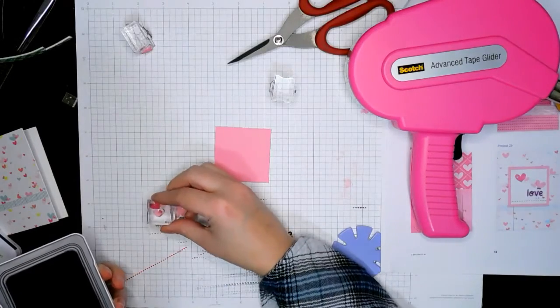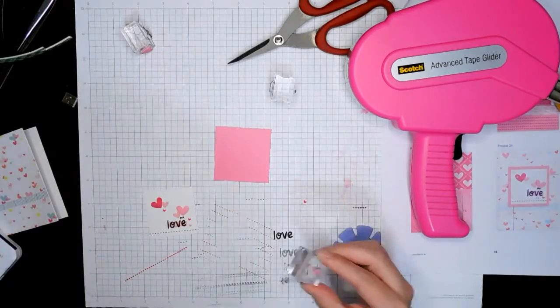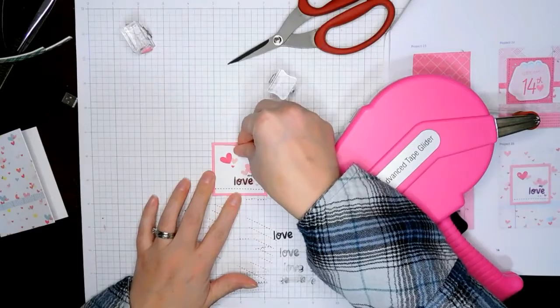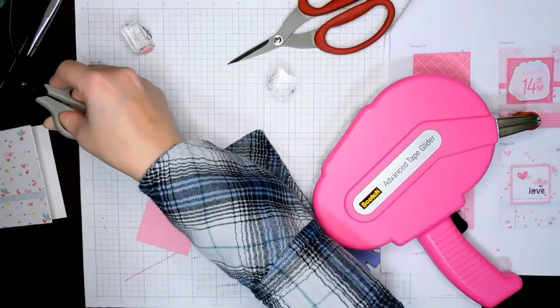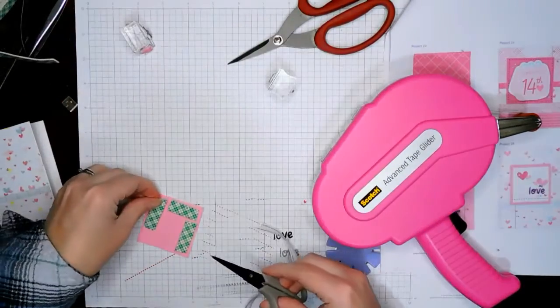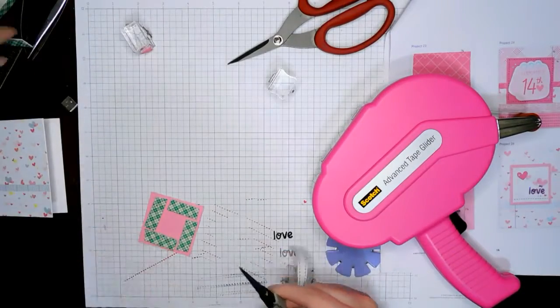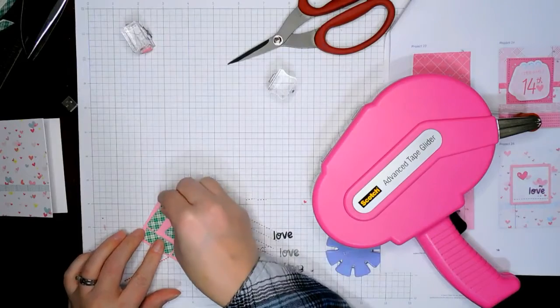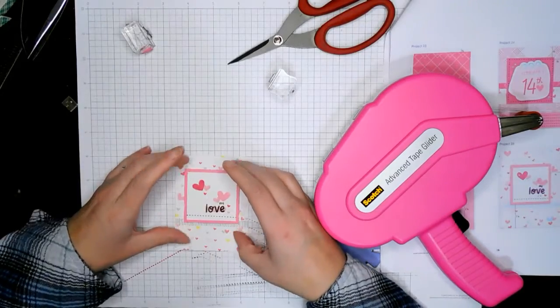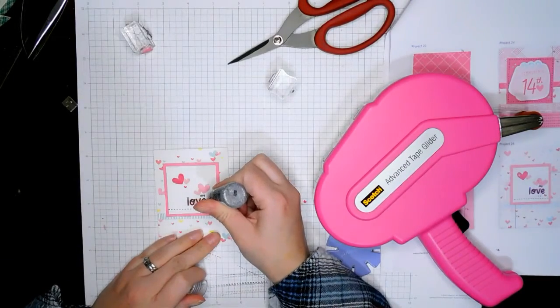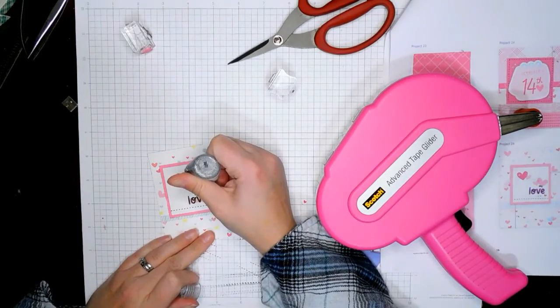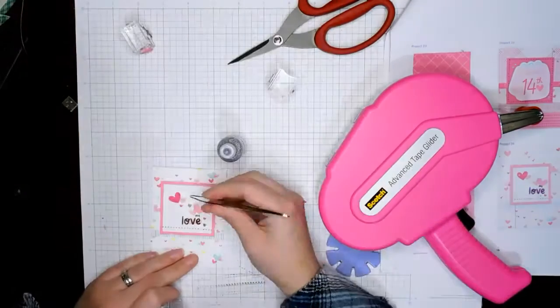I'm going to add the adhesive on here, put some foam tape on the back. Of course got to take the cover off the sticky. Then I'm going to go ahead and put it on my card. After I put it on my card, then I go ahead and add the stickles. I decide to do some stickles hearts, so I have sparkly hearts to go along with the rest of the hearts that are on the card.